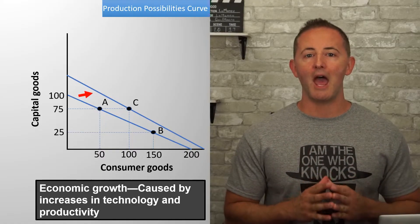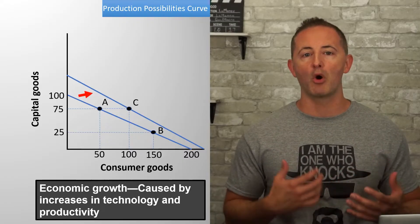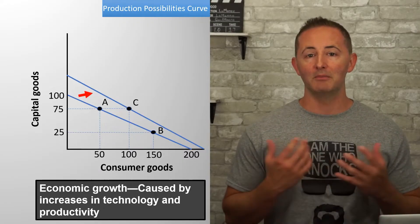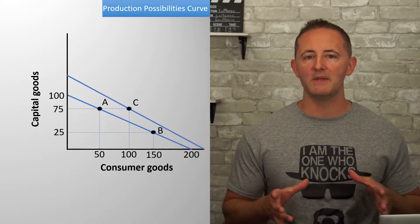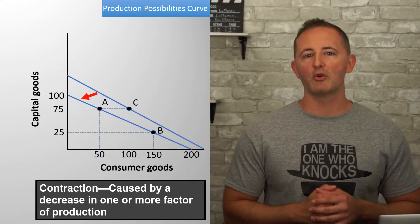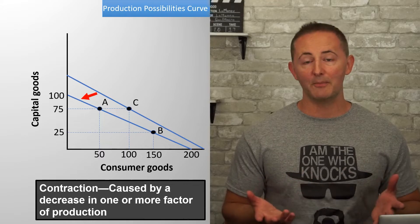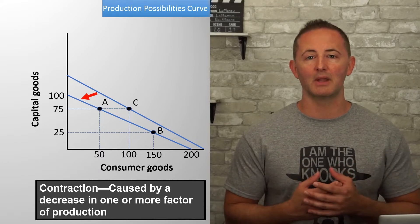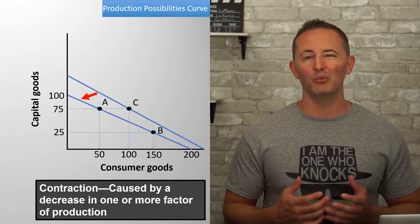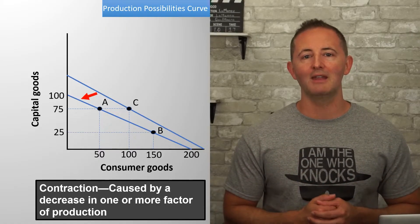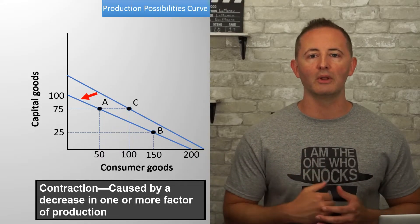Productivity refers to how much a worker can produce. So if workers are better educated or have more access to better technology and machinery, then those workers will be more productive. On the other hand, it's possible that the PPC could shift inward if there was a significant decrease in one or more of our factors of production. For example, if a war or disaster led to widespread destruction of a natural resource or loss of life, we wouldn't be able to produce as much, causing a contraction of the economy and shifting the PPC inward to the left.